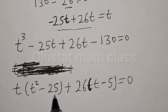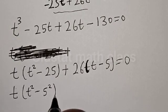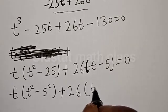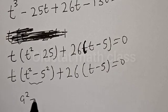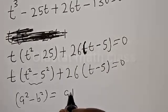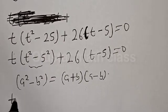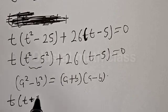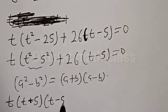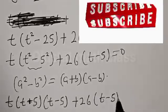We have t into t squared minus 25 plus 26 into t minus 5 equal to zero. Then t into t squared minus 5 squared plus 26 into t minus 5 equals zero. This is a difference of two squares: a squared minus b squared equals a plus b multiplied by a minus b. So the equation becomes t into t plus 5 multiplied by t minus 5, plus 26 into t minus 5, equal to zero.